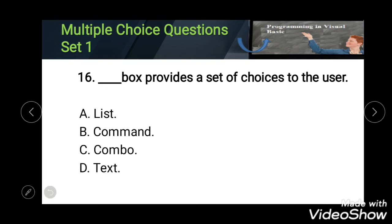Sixteenth: blank box provides a set of choices to the user. Options: List, Command, Combo, and Text. The correct answer is List.